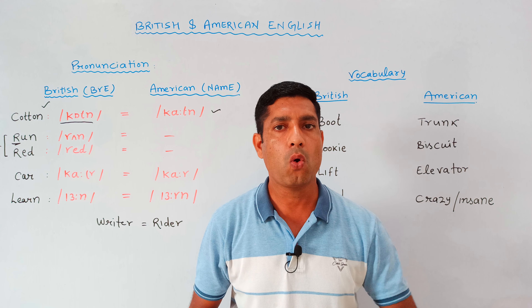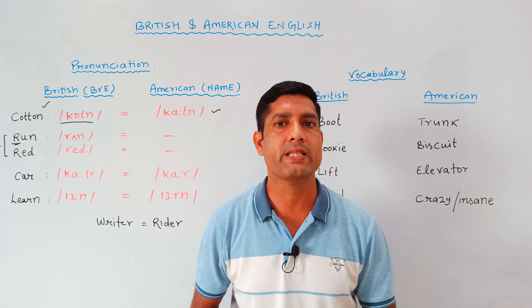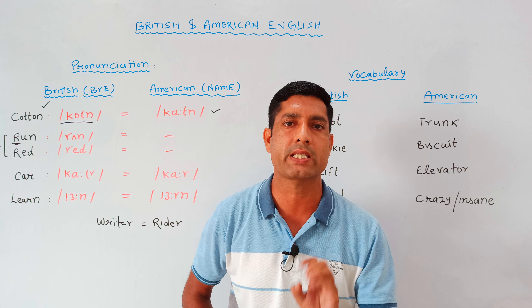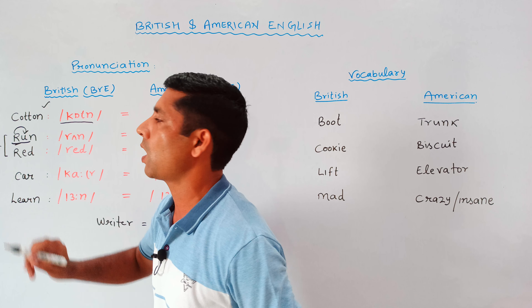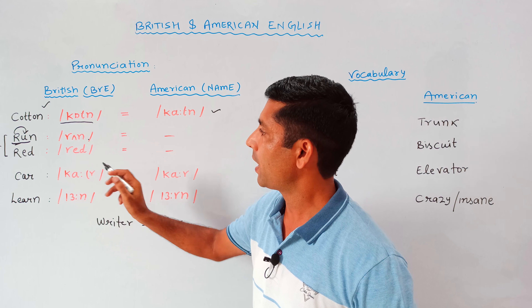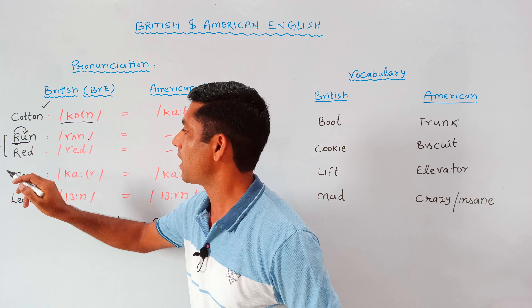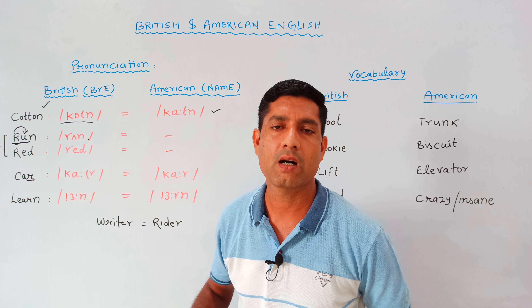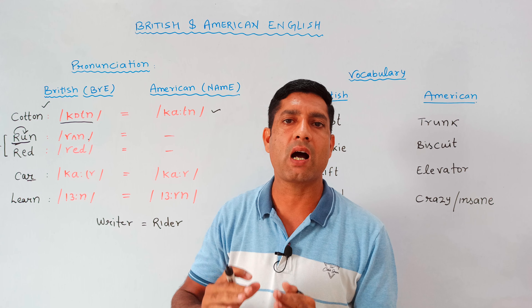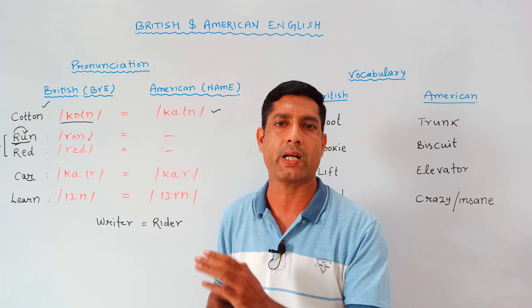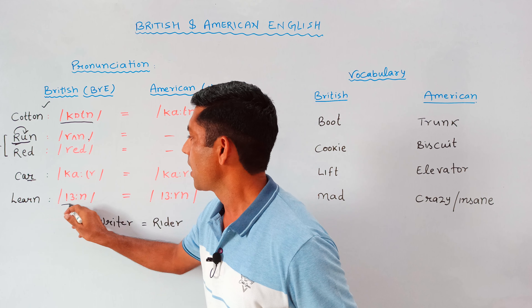Number one: if you look up any word in a standard dictionary, you will find that the pronunciation of American English differs from British pronunciation. For example, the word 'cotton' — in British English it is pronounced as 'cotton', but in American English it is pronounced as 'cotton' with a softer T sound.